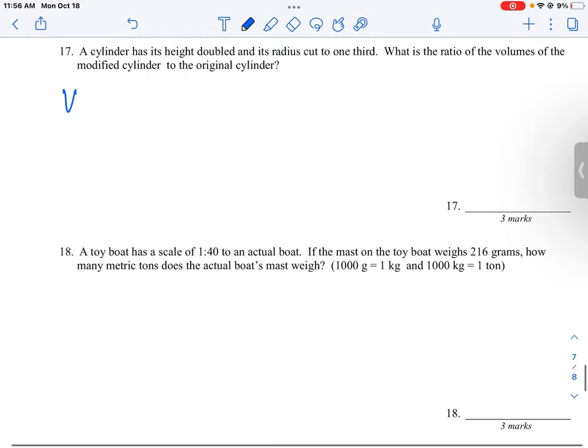So let's just do volume of a cylinder. Any cylinder, the volume is pi r squared, which is the area of the base, times the height. That's the volume of any standard cylinder.